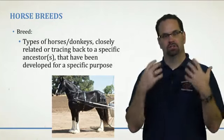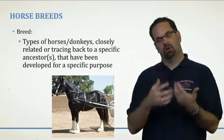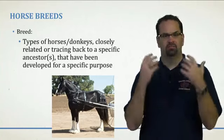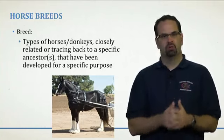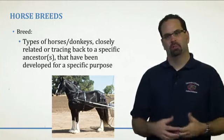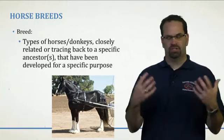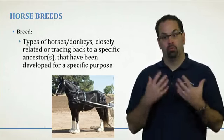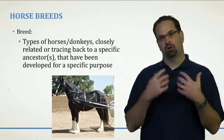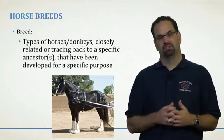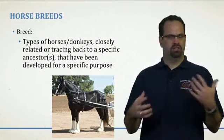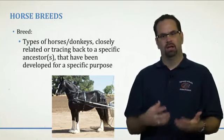Over the last few thousand years, as man has evolved the horse through artificial selection, they've bred these animals or certain breeds for specific purposes. We're going to talk about draft horses and draft animals — they were bred to be able to plow fields and pull carts and wagons — as well as light horses and warm bloods that are more for riding.